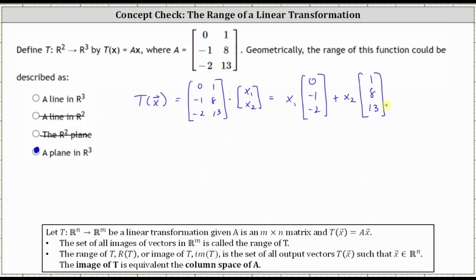This is just emphasizing that once again, the range or the image of the transformation is equivalent to the column space of matrix A. All the output vectors are linear combinations of these two vectors in R3, and because they are linearly independent, the span of these two vectors where all linear combinations make up the yellow plane that we just saw.